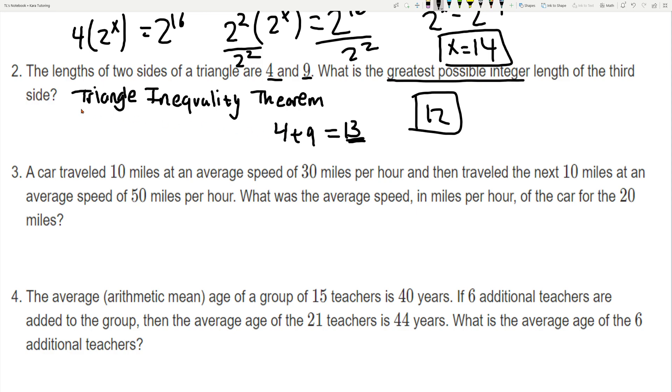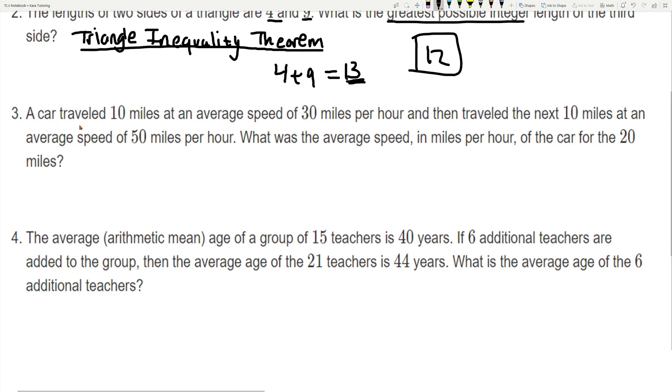And I'll leave links in the description for a triangle inequality theorem so you guys can go over that but that's not tested that much on SAT. A car traveled 10 miles at an average speed of 30 miles per hour and then traveled the next 10 miles at an average speed of 50 miles per hour. What was the average speed for the 20 miles?